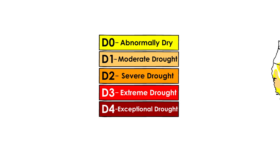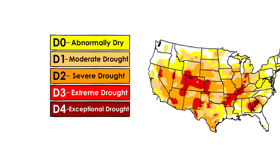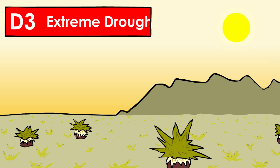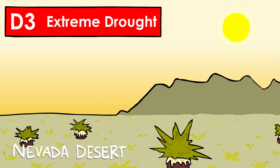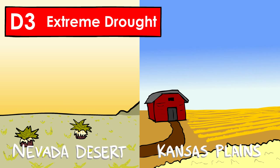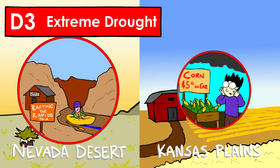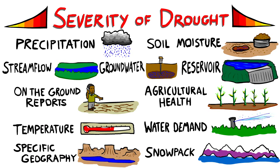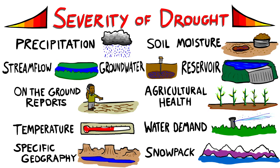Different classes of drought mean different things in different places, and the effects can be drastically different as well. A D3 extreme drought in the Nevada desert looks very different from a D3 extreme drought in the middle of Kansas, affecting tourism in one place while agricultural in the other. It's also important to point out that individual factors may vary greatly throughout a region, which makes assigning the drought category a challenging process.